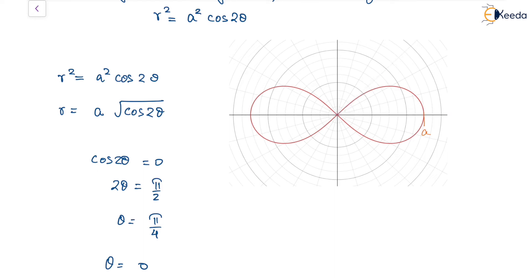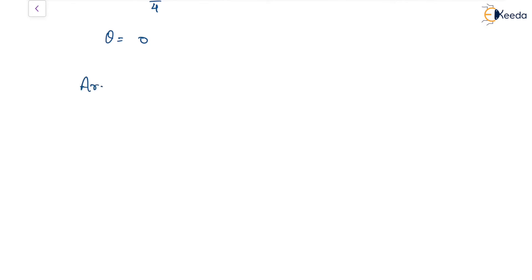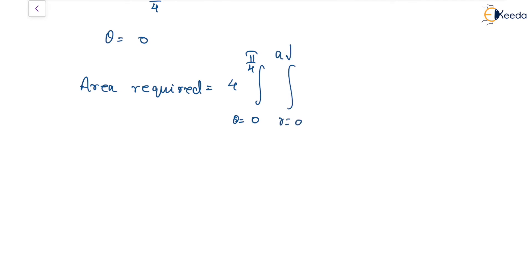The radius varies from 0 up to r = a√(cos 2θ). So the area required — taking one fourth and multiplying by four — is: 4 times the integral, with θ varying from 0 to π/4 and r from 0 to a√(cos 2θ), of r dr dθ.